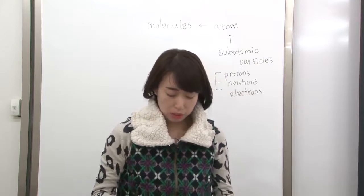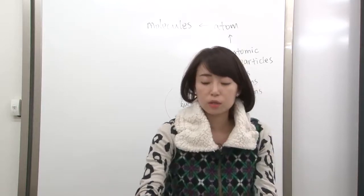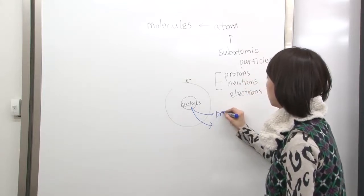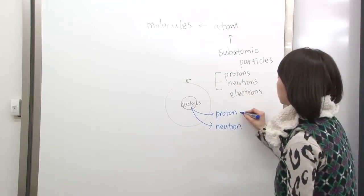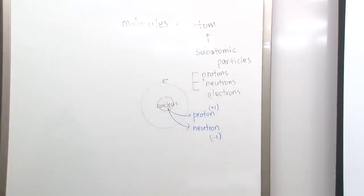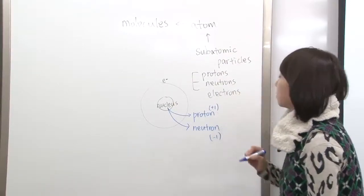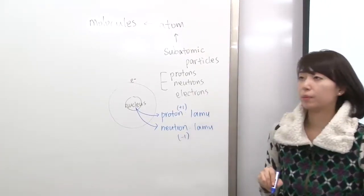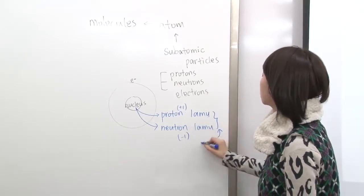When you go to page 37 on table 4.1, they talk about charge, mass, and location. Inside the nucleus, you have proton and neutron. Proton is charged by positive 1, and the neutron is charged by negative 1. When you're talking about the masses of these two, they are both 1 amu. So that's the mass of these two. These two are called nucleons.